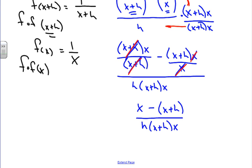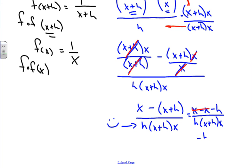We're left with x minus the quantity (x plus h), all over h times (x plus h) times x. Distributing the negative: x minus x minus h. The x terms cancel, leaving negative h over h times (x plus h) times x. The h's cancel, and we get our final answer: negative 1 over the quantity (x plus h) times x.